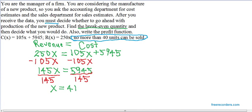then what are you going to decide as far as whether to go ahead with production is concerned? You're going to decide not to go ahead with production, because there's no way to make a profit. There's no way to even break even if you can't sell more than 40 and you need to sell 41 to break even.